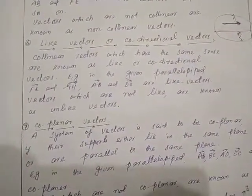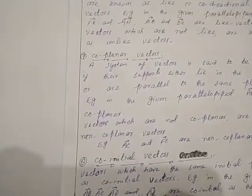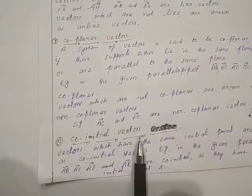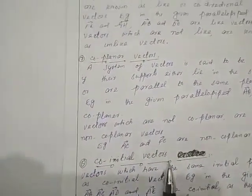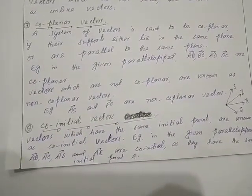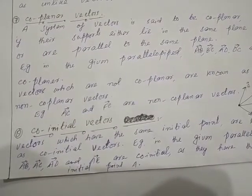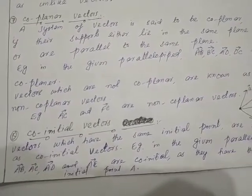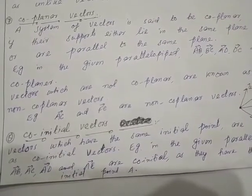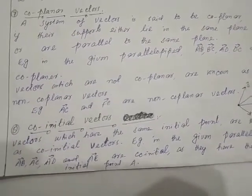This was the seventh type of vectors — coplanar vectors. Now the next type is known as co-initial vectors. As the name suggests, 'co-initial' means the same initial point. Vectors which have the same initial point are known as co-initial vectors — all the vectors that originate from one common point.